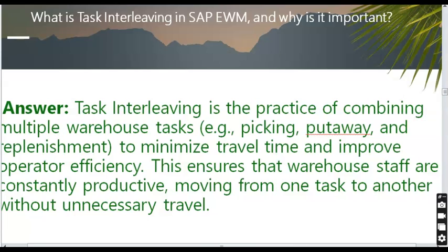What is task interleaving in SAP EWM and why is it important? Task interleaving is the practice of combining multiple warehouse tasks — such as picking, put-away, and replenishment — to minimize travel time and improve operational efficiency. This ensures warehouse staff are constantly productive, moving from one task to another without unnecessary travel.